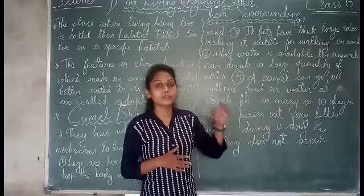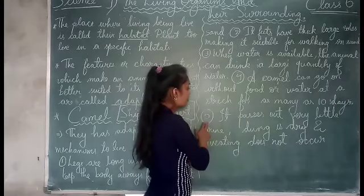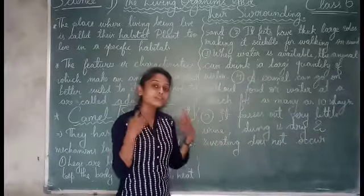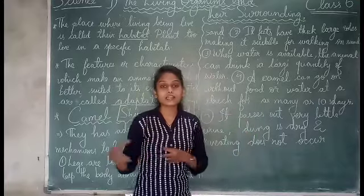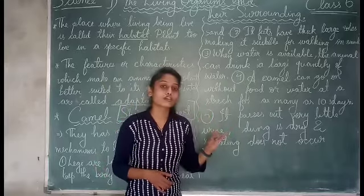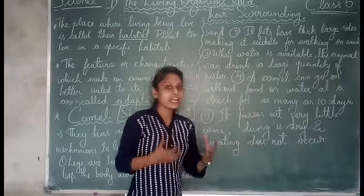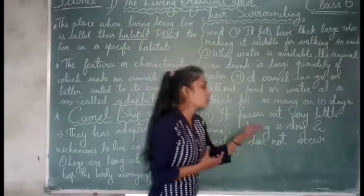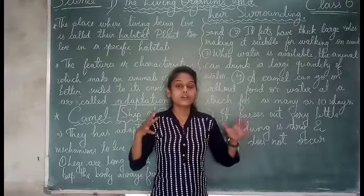The camel can survive without food and water. It also passes out very little urine. Urine is how the body removes waste water, but camels remove very little water this way, so they can survive longer. Their dung is also very dry, containing very little water. They also do not sweat much. Because of all these features, they can survive in hot weather. That is why we call the camel the 'ship of the desert.'